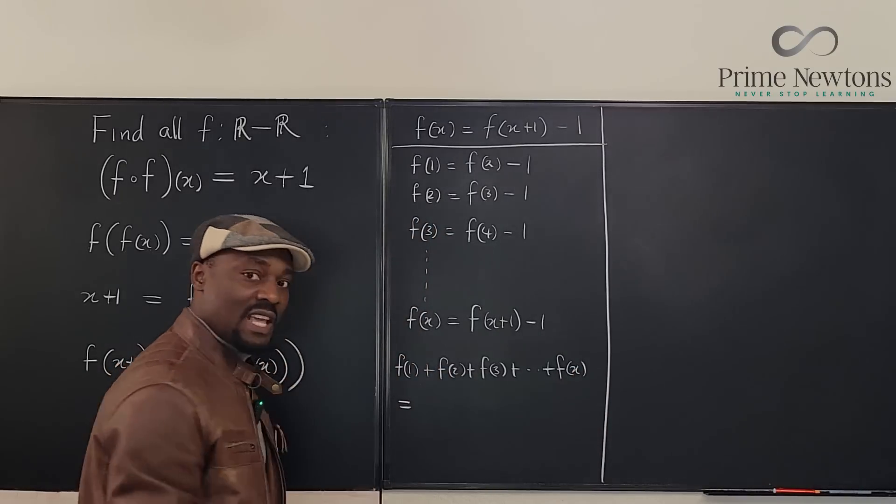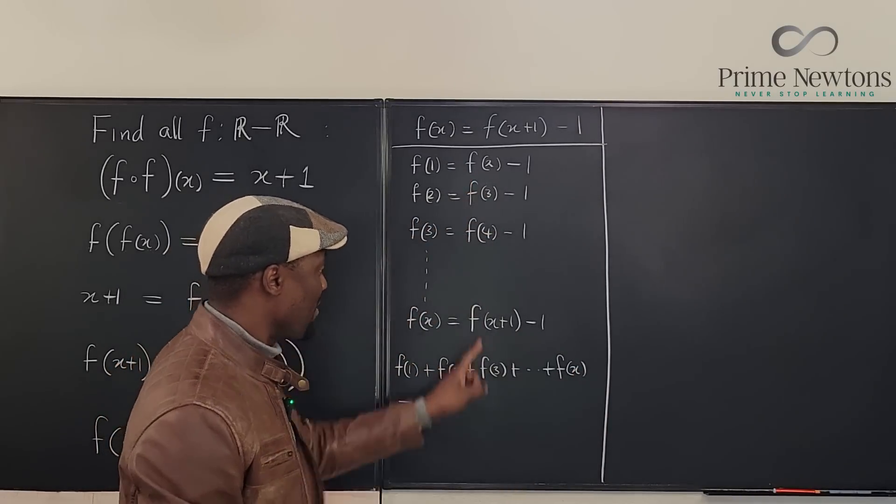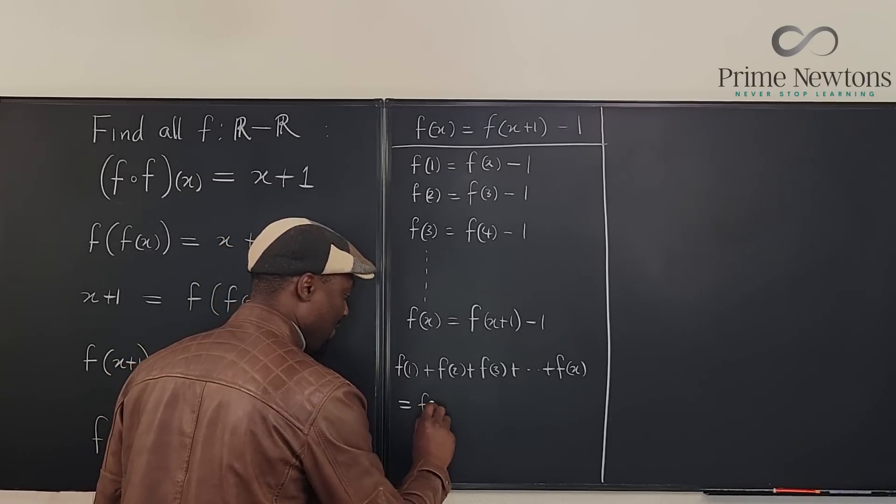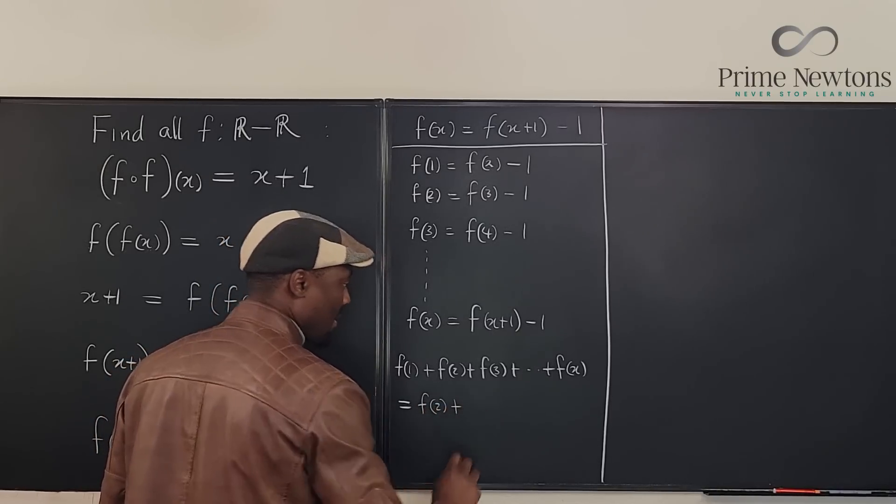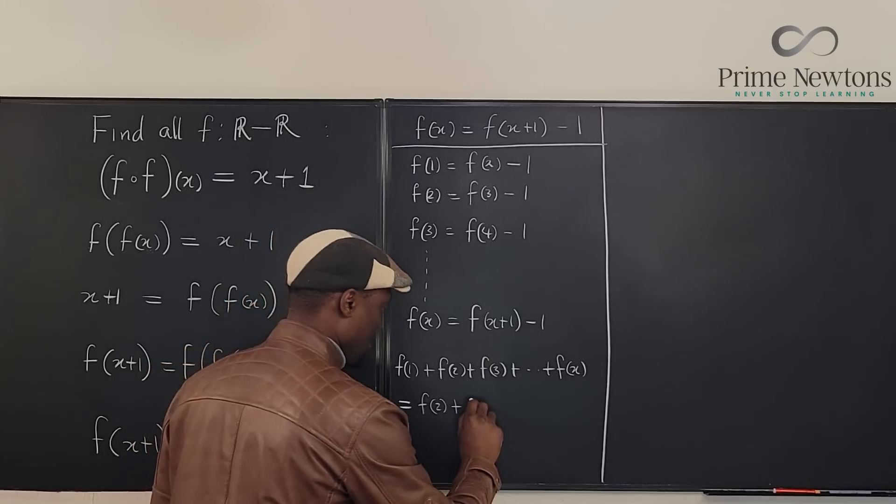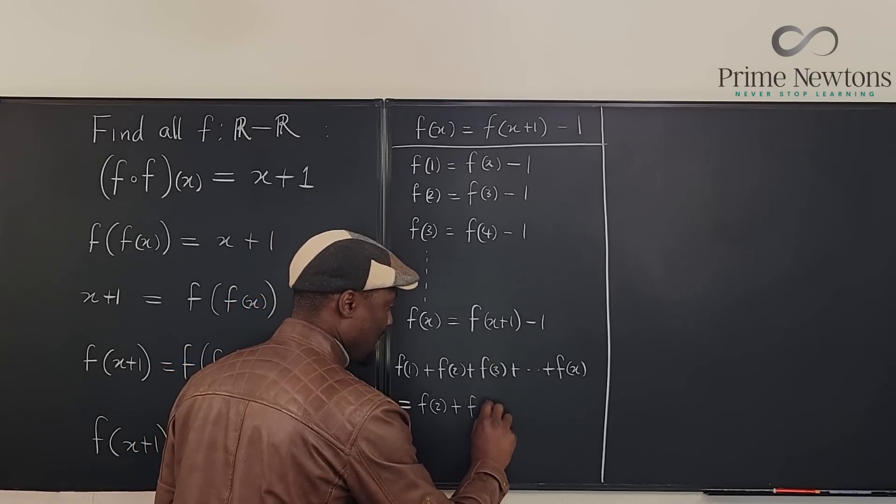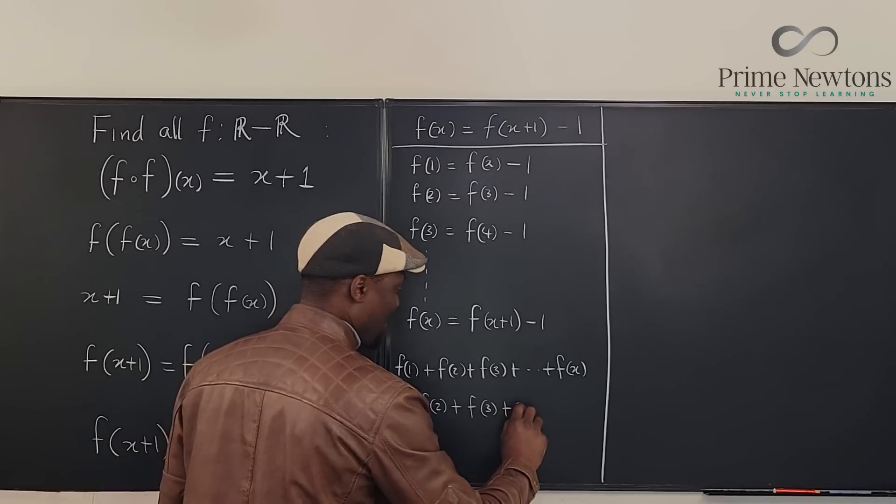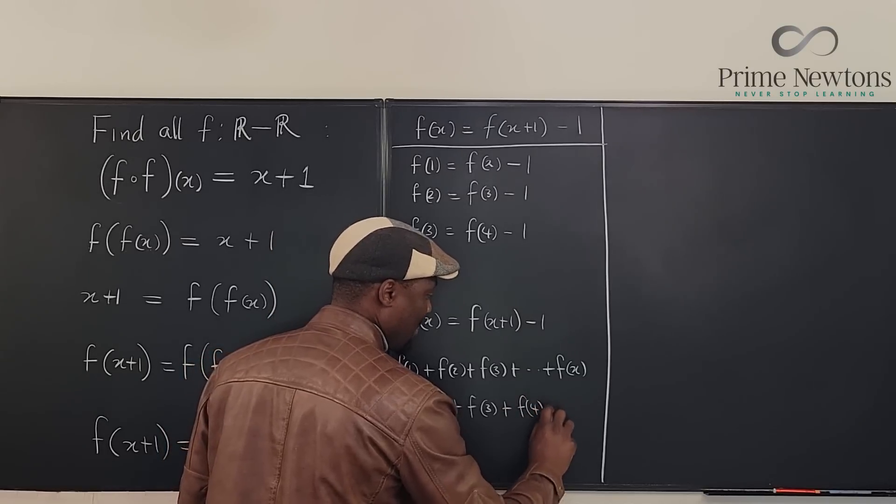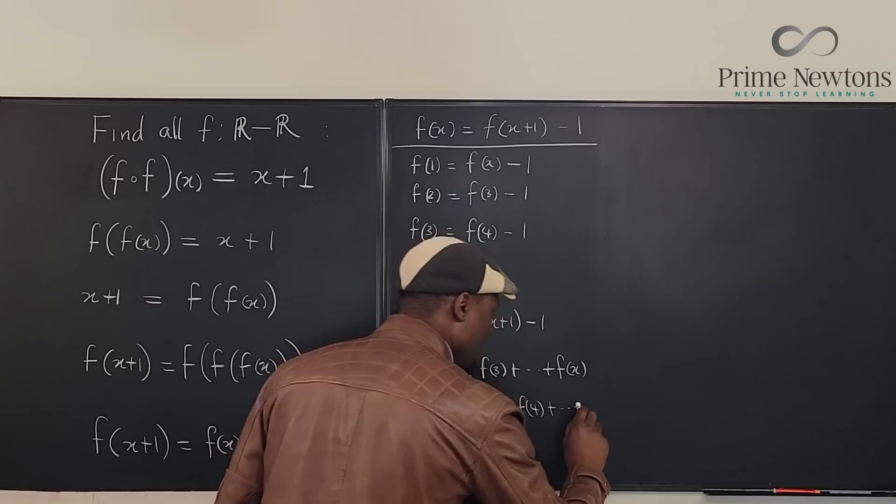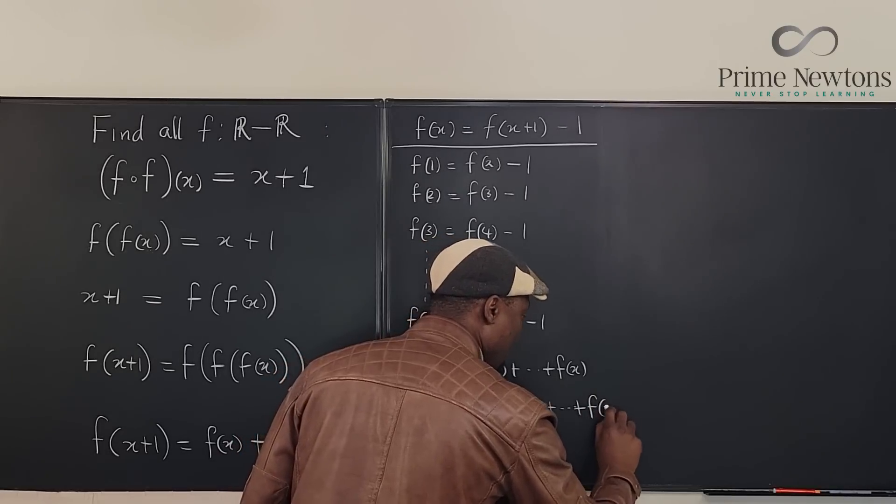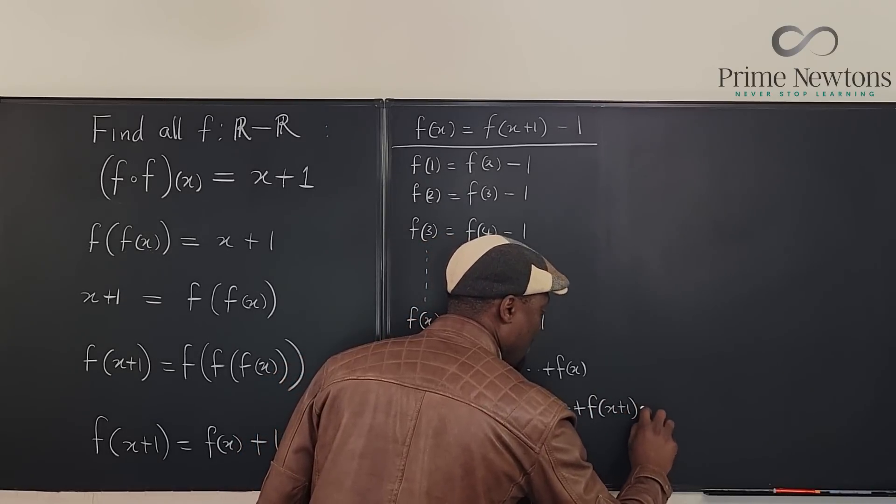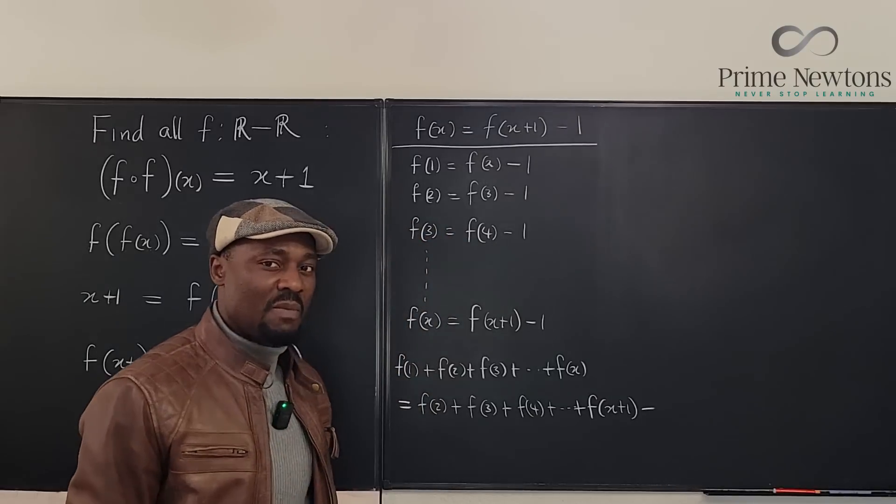And this is going to be equal to everything on the right hand side. I'm going to add up everything here. It's going to be f of two plus f of three plus f of four plus f of x plus one minus.